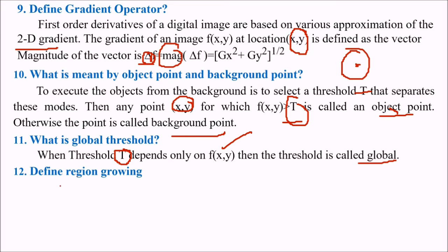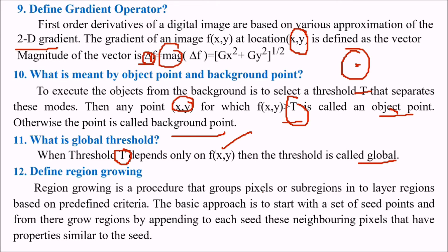Define region growing. Region growing is a procedure that group pixels or sub region into larger region based on predefined criteria. The basic approach is to start with a set of seed points, say one point or two points, and then from there grow regions by appending these seed points with their neighboring pixels that have properties which are similar to the seed points.